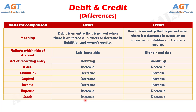Difference number 9: stock shows an increase by the amount debited, whereas stock shows a decrease by the amount credited. Debit and credit are the two sides of the same coin. One must note that debit entries of each transaction must tally its credit entries. These are the differences between debit and credit in accounting. If this lecture was helpful, give it a thumbs up and subscribe to the channel. Thank you.